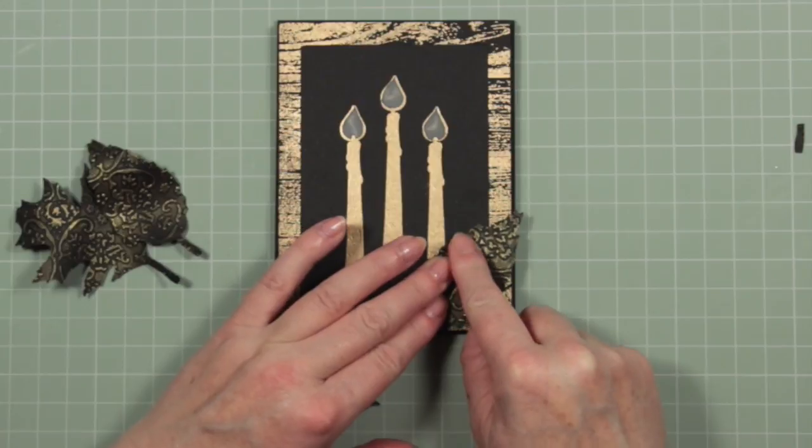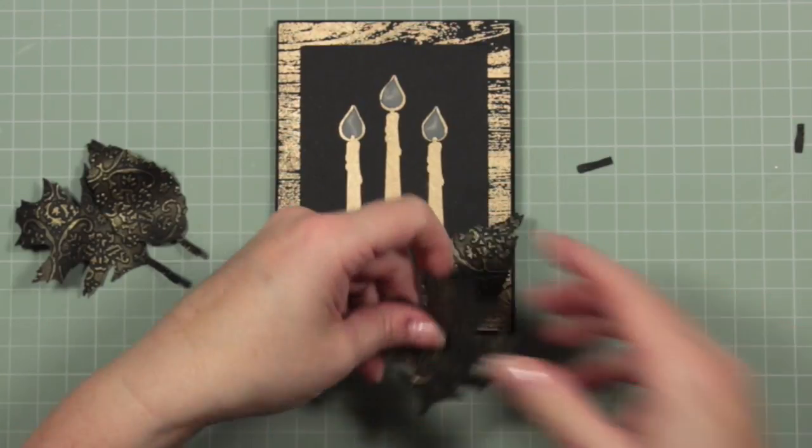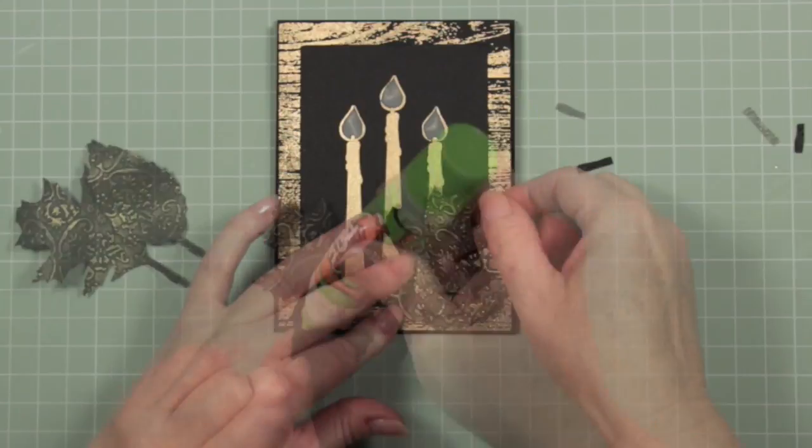I'm not going to glue the leaves flat on there. I want that dimension. So I'm only going to glue where the leaf touches the frame.